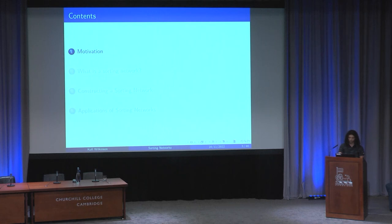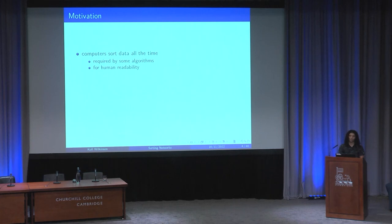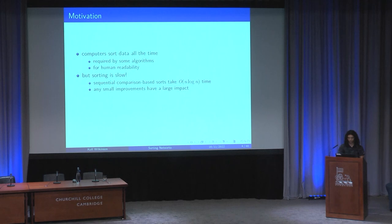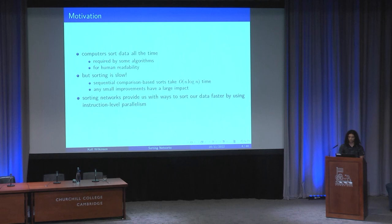So we'll start with the motivation. Computers sort data all the time. Some algorithms require us to sort data — for example, Kruskal's minimum spanning tree algorithm, and also the simple binary search. We also sort for human readability; for example, we might sort items by cheapest on an online store. But sorting is slow. The asymptotic time complexity bound for sequential comparison-based sorts is O(n log n) time for n input items, which brings lots of overhead into our daily computation. Any small improvements we make to the ways we sort will have a large impact. Sorting networks provide us with ways to sort data faster by taking advantage of instruction level parallelism.